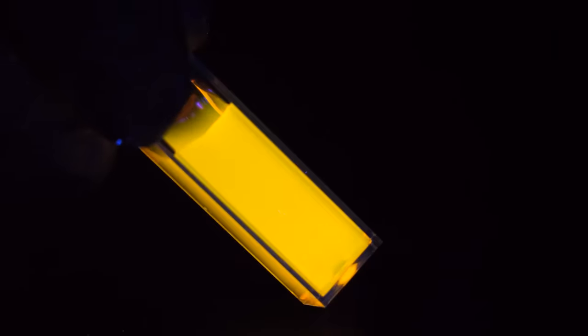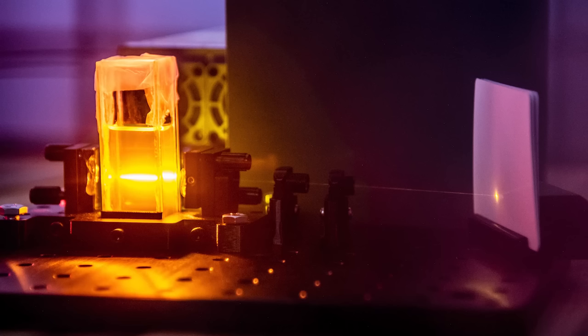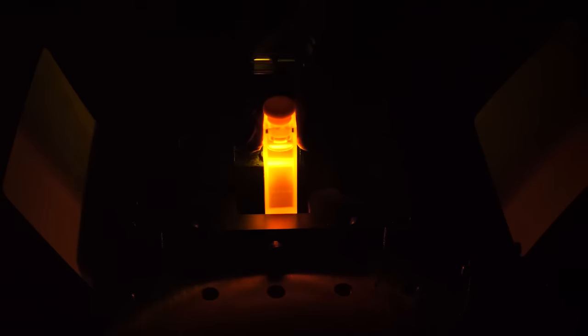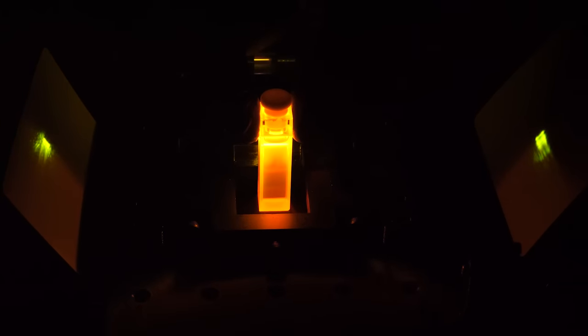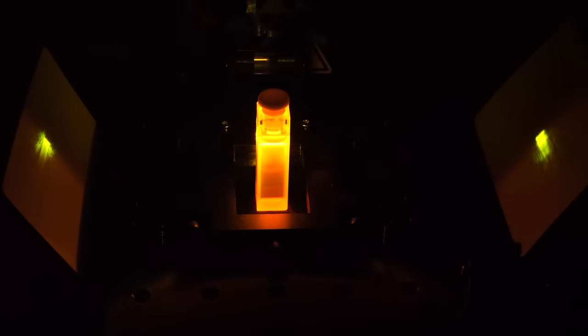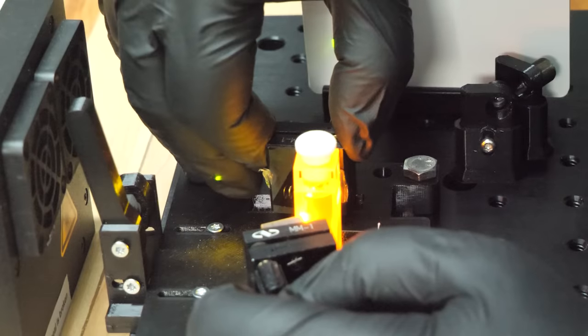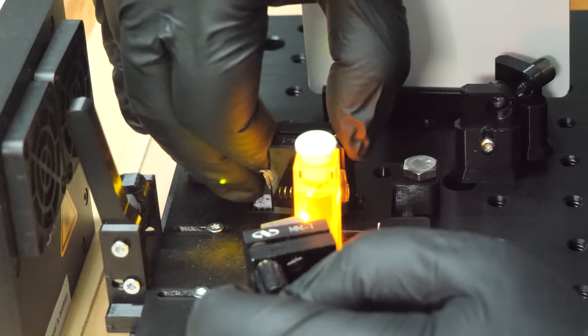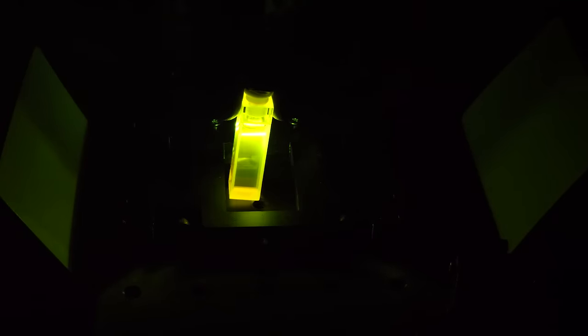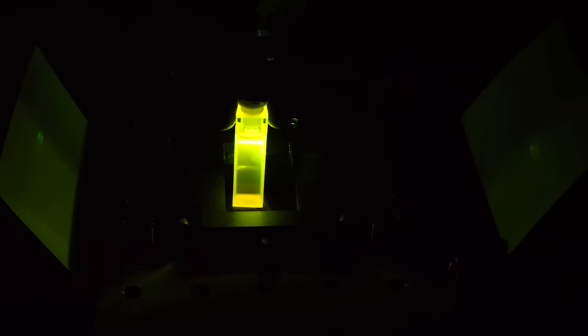To get this setup working, I highly recommend starting with rhodamine 6G. Saying it's the easiest to get to laze is an understatement. Just watch this. Even with no mirrors and just the lens to focus the UV light into the beam, if I hold the cuvette in my hand and move it into the focal point, laser beams come flying out the sides. Those beams are incredibly useful when trying to align the mirrors initially.